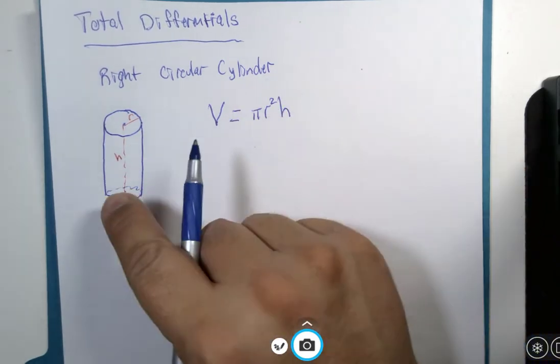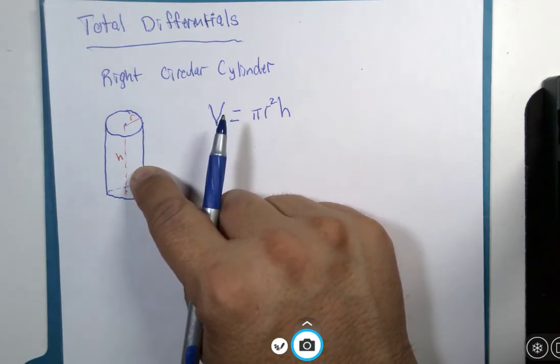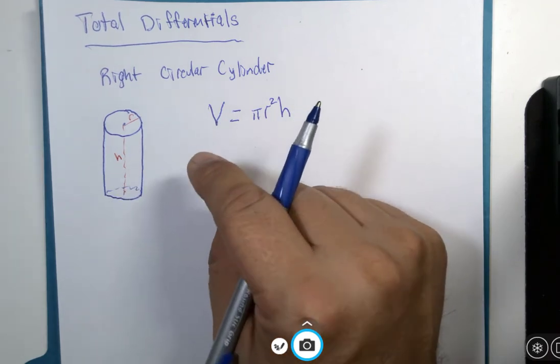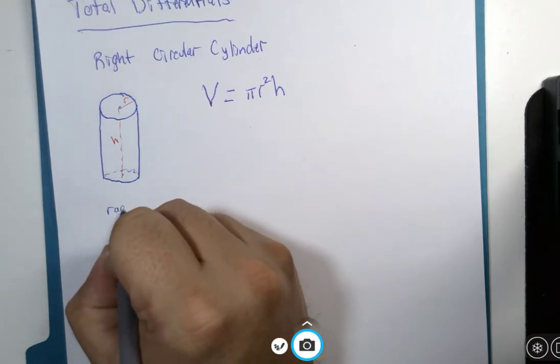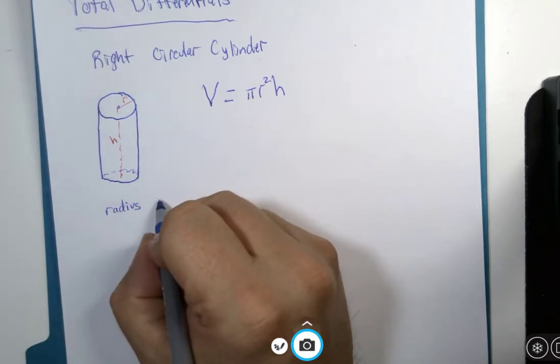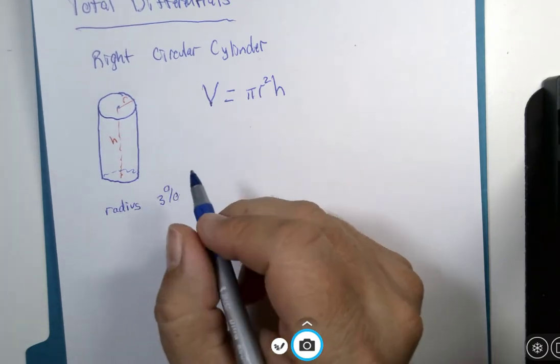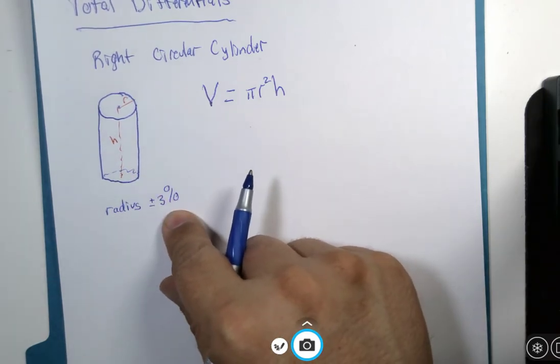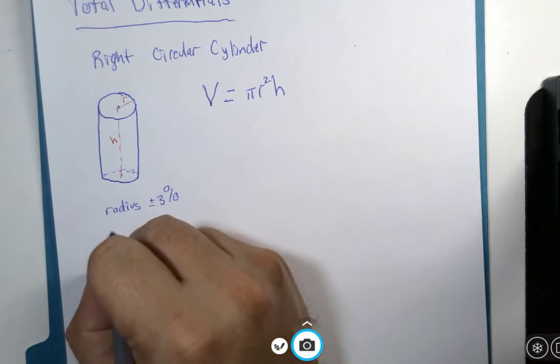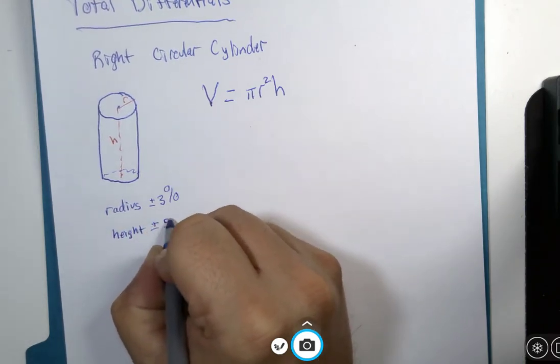So instead of me giving you specific measurements for finding the total differential, let's suppose that we know that the radius is accurate to plus or minus 3%. So it's got a 3% error at its worst case, and that the height has a possible error of 5%.